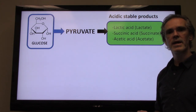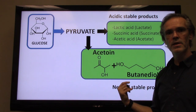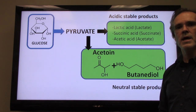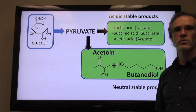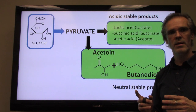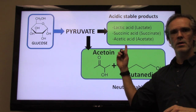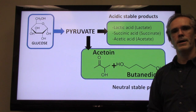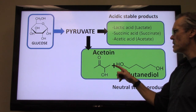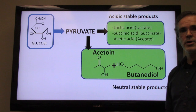Another outcome that can happen is the production of neutral stable products. So whereas the first outcome produces acidic molecules with pH below 7 - probably below 6 - these other products are neutral. Either acidic products are produced or neutral products are produced. In our case, the neutral products produced by enterobacteria would be acetoin and butanediol.